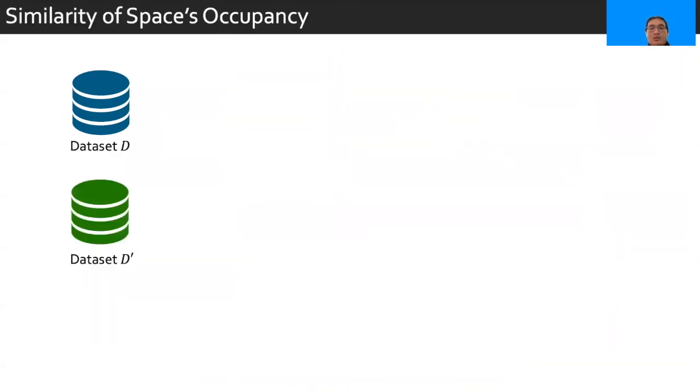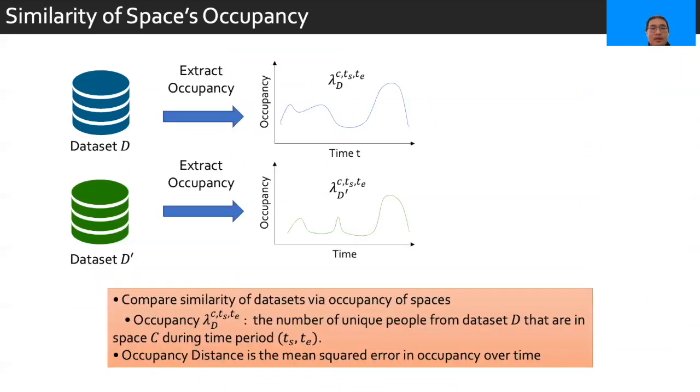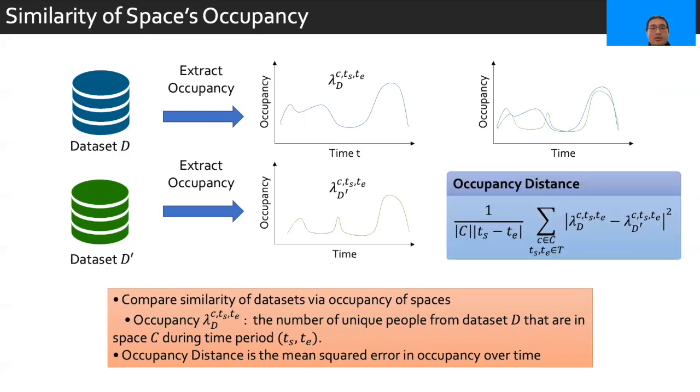For a space's occupancy, we start by extracting the time series of occupancy of each space in the dataset. Then, it becomes relatively straightforward to compare occupancies against one another. Simply, we use the mean squared error between occupancies for our approach, and so the occupancy distance can be formalized as shown.